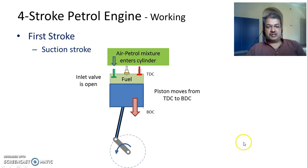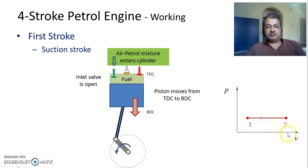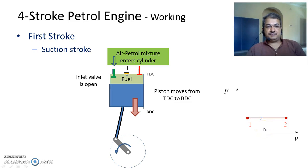This stroke is represented on a PV diagram where the pressure remains constant at atmospheric pressure. We can see the volume increasing during the suction stroke, which necessarily takes place at constant pressure.